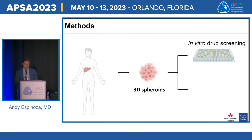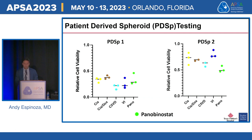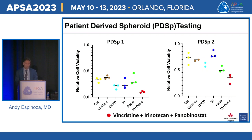We took patient tumors and created 3D spheroids to drug screen the pan-HDAC class inhibitor panobinostat, hypothesizing it would be effective in vitro. Monotherapy panobinostat compared to standard chemotherapy showed average cell viability of 30 to 50% in two patient-derived spheroids. However, the combination of vincristine, irinotecan, and panobinostat showed the lowest cell viability in both patient-derived spheroids.